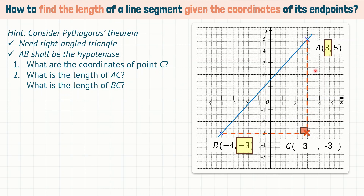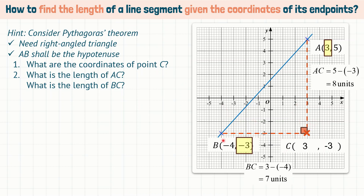We can simply count the number of units or do a simple subtraction. The length of AC is found using the y-coordinates: 5 minus negative 3, which gives us 8 units. For the length of BC, since this is a horizontal length, we take the difference in the x-coordinates: 3 minus negative 4, which gives us 7 units.